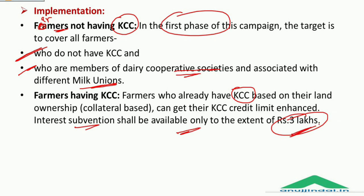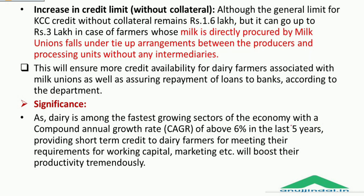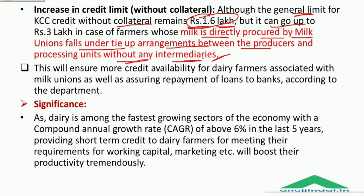The credit limit can go up to Rs. 3 lakh, but the general limit for KCC credit without collateral remains Rs. 1.6 lakh. The limit can go up to Rs. 3 lakh in case of farmers whose milk is directly procured by milk unions under tie-up arrangements between producers and processing units without any intermediaries. This will ensure more credit availability for these farmers.